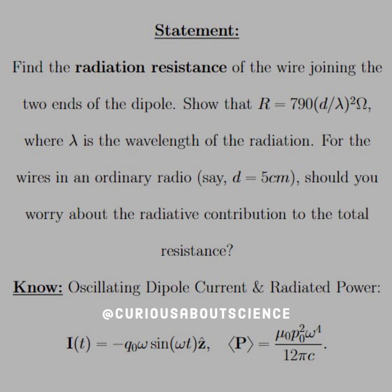Okay, what we need to know is that the oscillating electric dipole current and the radiated power is given as such. Negative Q omega sin(omega T) Z hat.